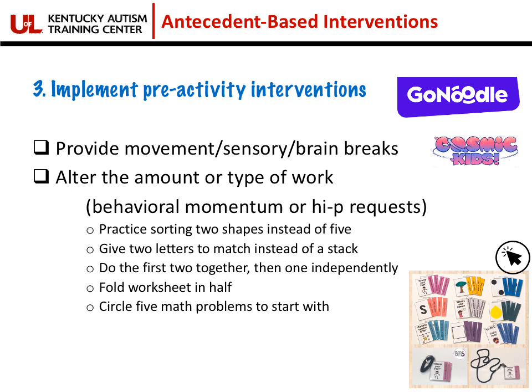Some other pre-activity interventions you can use are movement, sensory, or brain breaks. Most elementary classrooms take advantage of Go Noodle or Cosmic Kids Yoga, but sometimes it's just being able to stop, take a breath, shift your attention for a minute, or do something fun. You can also alter the amount or type of work. There's a concept called behavioral momentum or high-probability requests, which can be very powerful, especially for students with autism, during a task that is difficult or not of interest to them.